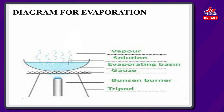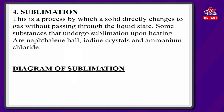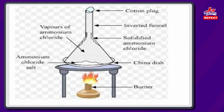Next is sublimation, which is the process by which a solid directly changes into gas without passing through the liquid state. Examples of substances that go through this method include naphthalene balls (camphor), iodine crystals, and ammonium chloride. In the apparatus, you have a Bunsen burner, a china dish or petri dish (P-E-T-R-I dish), and the substance to be sublimed. An inverted funnel is placed over the dish with a cotton wool plug at the top hole.